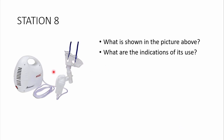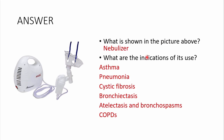Station 8: study the picture and answer — what is shown? What are the indications for its use? This is a nebulizer. It can be used in pulmonary conditions such as asthma, pneumonia, cystic fibrosis, bronchiectasis, atelectasis, and bronchospasm. It can also be used in COPD, though COPD is uncommon in the pediatric setting unless a child is born with alpha-1-antitrypsin deficiency.